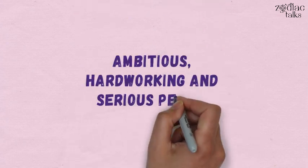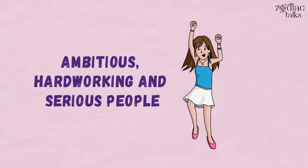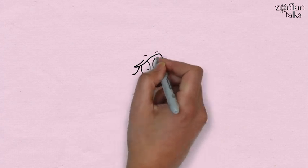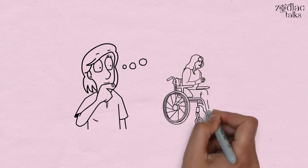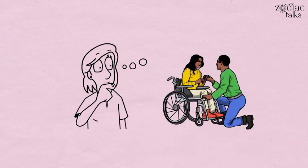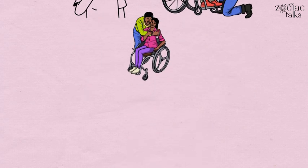Capricorn. Capricorns are ambitious, hardworking, and serious people who want to reach their goals. They're not the type who show PDAs to anyone easily. They take their time to understand you, trust you, and finally commit to you. Only then will they express their love for you in public, and that too in subtle ways like holding your hands or hugging you.